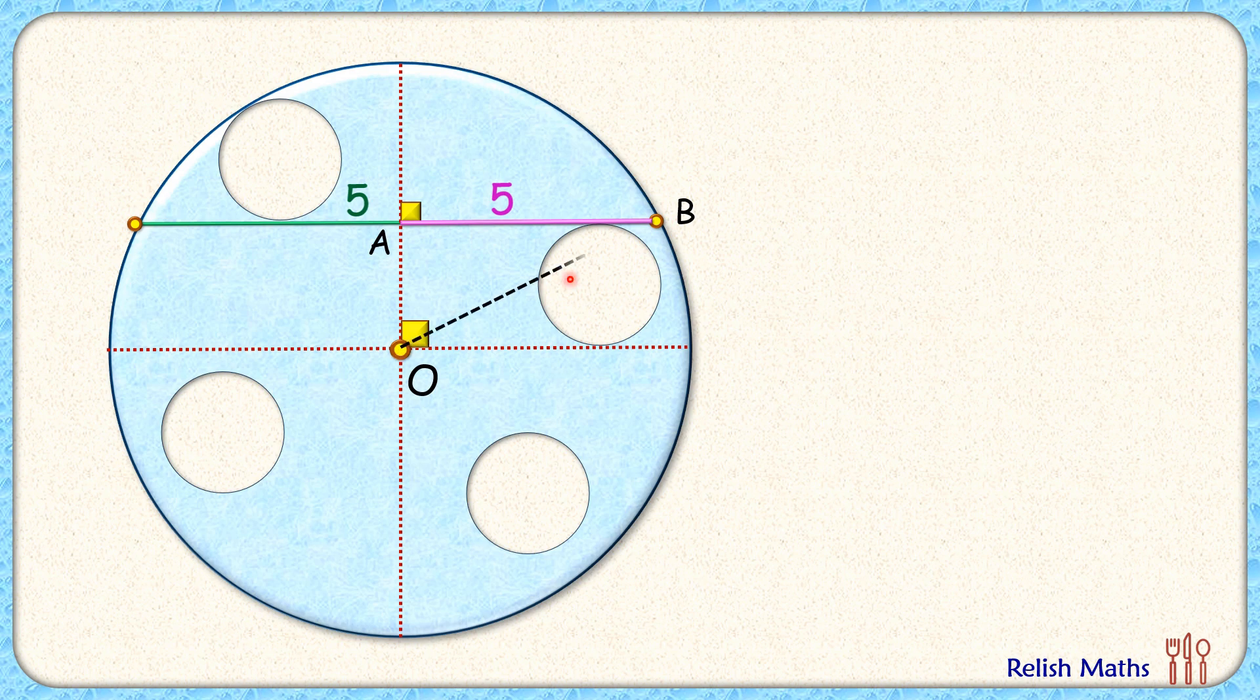Let's join OB here, and in this pink triangle the length OB that's the radius of the bigger circle, let's call it capital R, and the length OA will be the same as the diameter of this circular hole, and that is 2r, small r. Now here applying Pythagorean theorem in this triangle we get R² = (2r)² + 5².